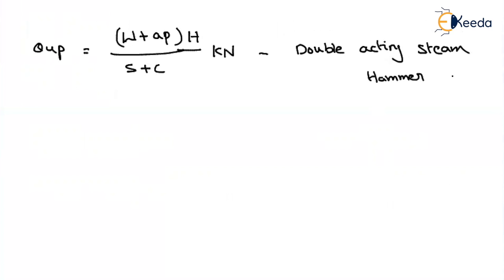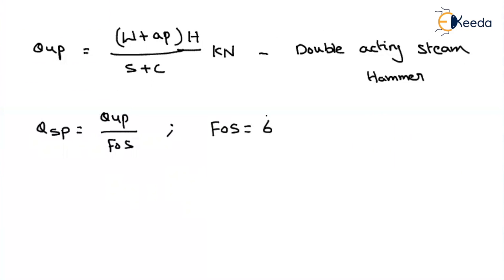Now, what about the safe capacity? Safe capacity is written as ultimate capacity divided by the factor of safety. In general, the factor of safety is adopted as 6 for the ENR formula. You have to memorize this value — it may or may not be given in an exam, but if it is the Engineering News Record formula, remember the factor of safety is 6.